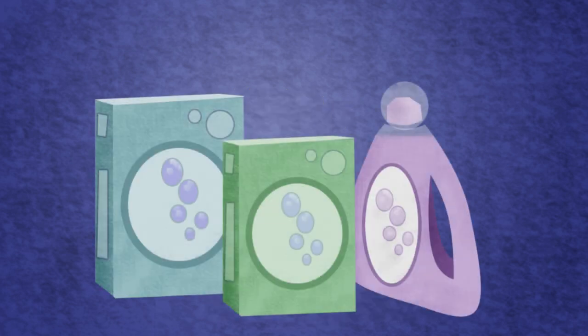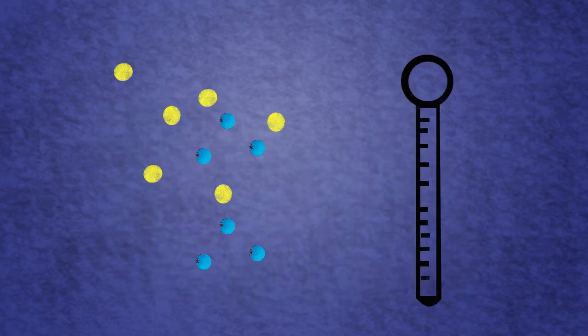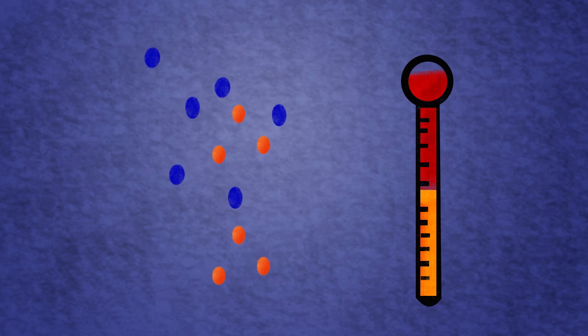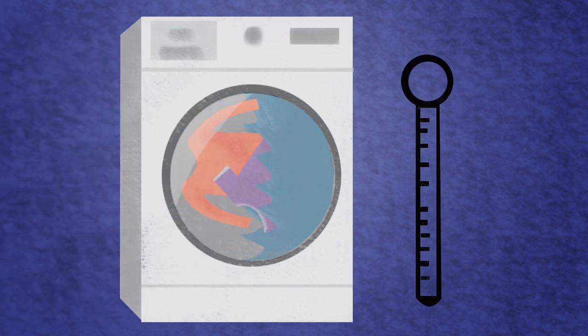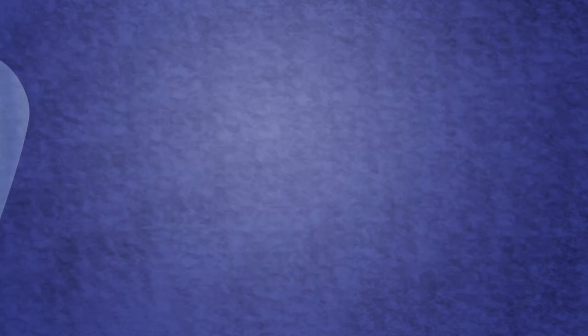There are many advantages to using these biological detergents. These enzymes have an optimal temperature of around 40 degrees Celsius. High temperatures will denature the enzyme, causing it to lose its shape and therefore its effectiveness. This means that your laundry can be done in warm instead of hot water, thereby costing less energy to heat water.